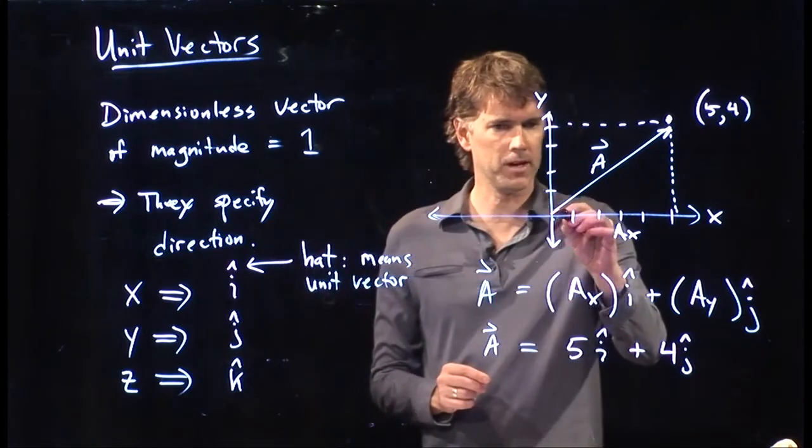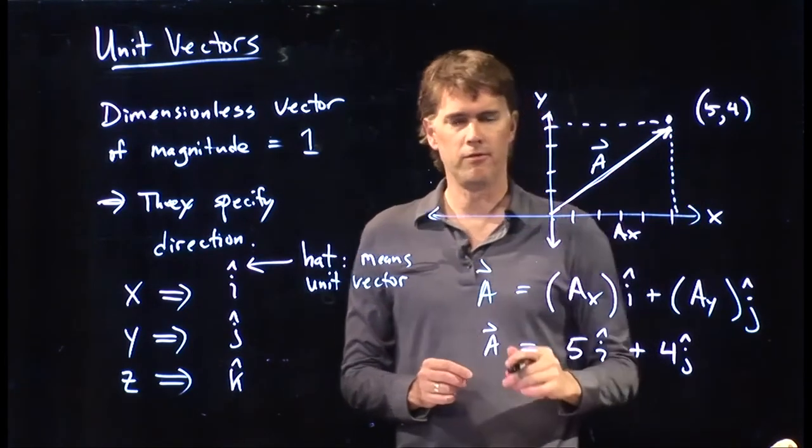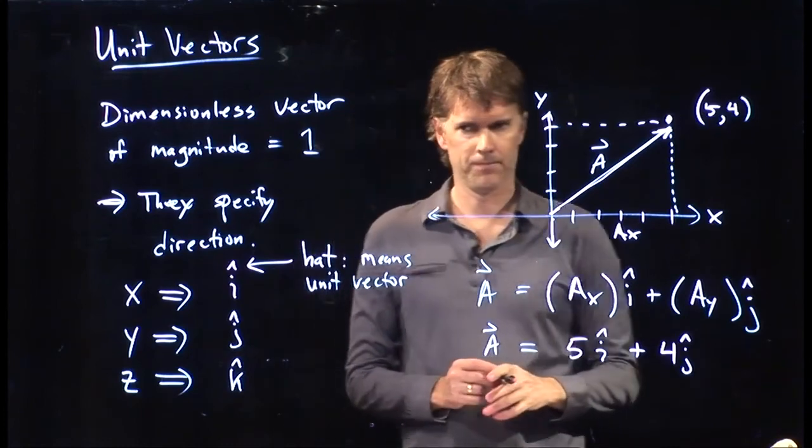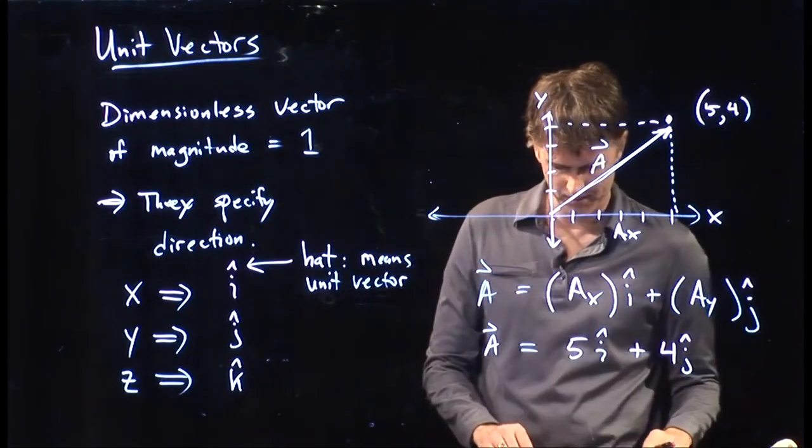That's what those two things mean. And that is this vector right here. It starts at the origin, and it goes up to that point. Five comma four. Okay? Everybody okay with that so far? All right. Good.